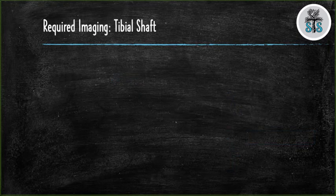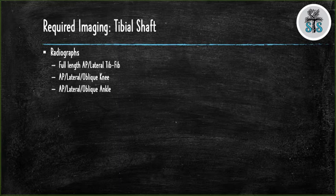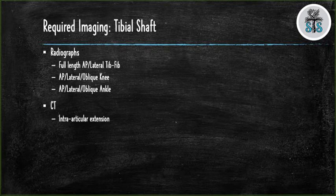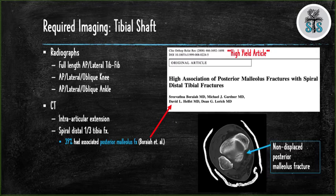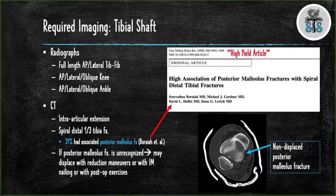Like all injuries in orthopedics, you need to image the joint above and the joint below — x-rays of the knee, tibia and fibula, and the ankle. A CT will be ordered if you're concerned for intra-articular extension. A classic article demonstrated that spiral distal third tibial fractures had a 39% association with posterior malleolus fractures. It is important to know if there is an associated posterior malleolus fracture as you may need to fix it prior to inserting your nail.